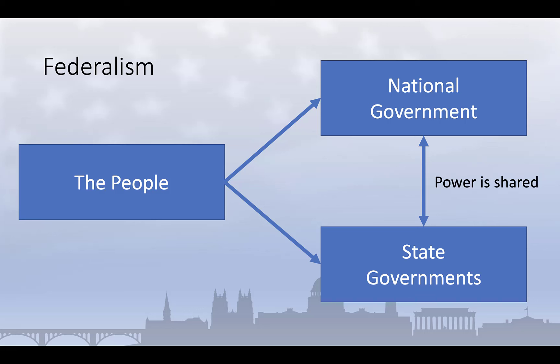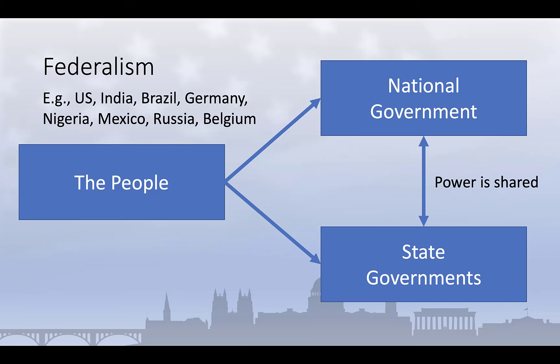The United States is one of about 25 countries worldwide that practice federalism. Other federal states include India, Brazil, Germany, Nigeria, Mexico, Canada, Russia, Belgium, and others. Federalism tends to be far more common in large, populous, and diverse countries, as it permits subsidiarity — the idea that decisions should be made as close to the people, that is at the lowest level of government possible. It also permits greater regional variation and local autonomy, ensuring that diverse populations can establish governments that meet their specific needs.